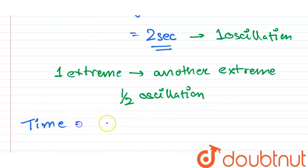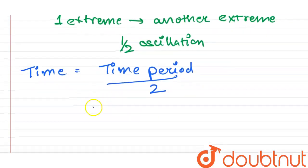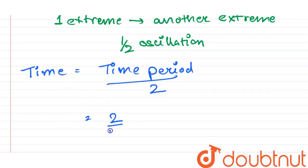Time equals T/2, which is the time period divided by 2. Time period is 2 seconds, so time will be 2 upon 2, that is one second. It will take one second to reach from one extreme to another extreme for the bob. That's all, thank you.